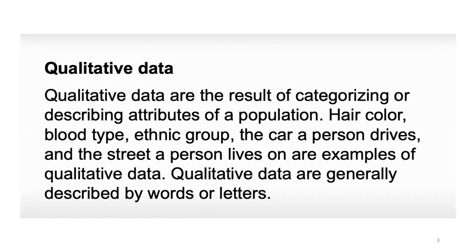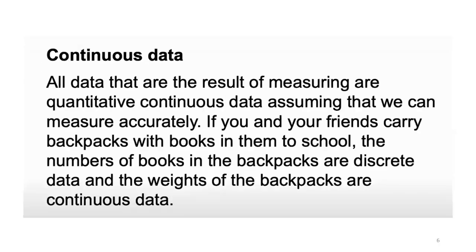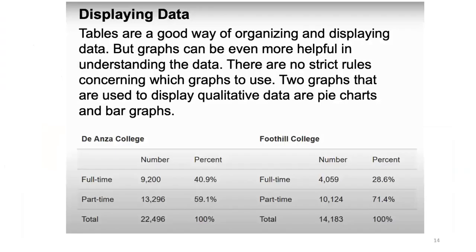For example, blood type — A positive, A negative, B positive, B negative — this is qualitative data. Ethnic group, the car a person drives, and the street a person lives on — that is basically qualitative data. These types of data are generally described by words or letters. You can use a pie chart or bar graph to display this kind of data.